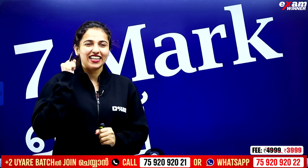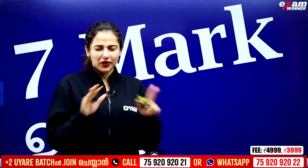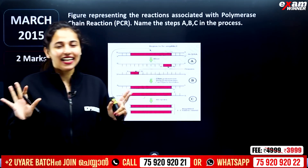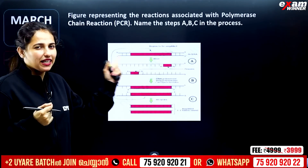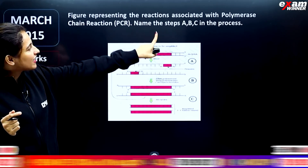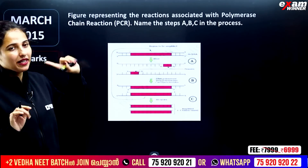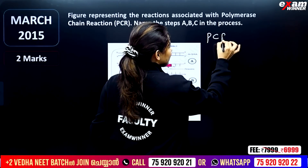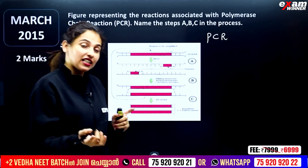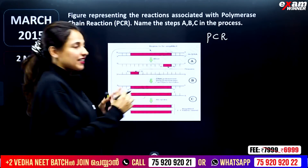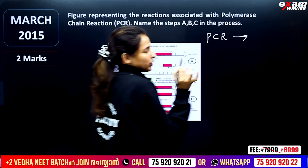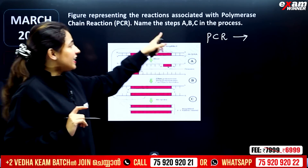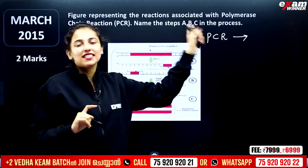Now, if you look at the textbook figure representing the reactions associated with the polymerase chain reaction, and you are interested in PCR — polymerase chain reaction — the question is: name the steps A, B, C in this process.